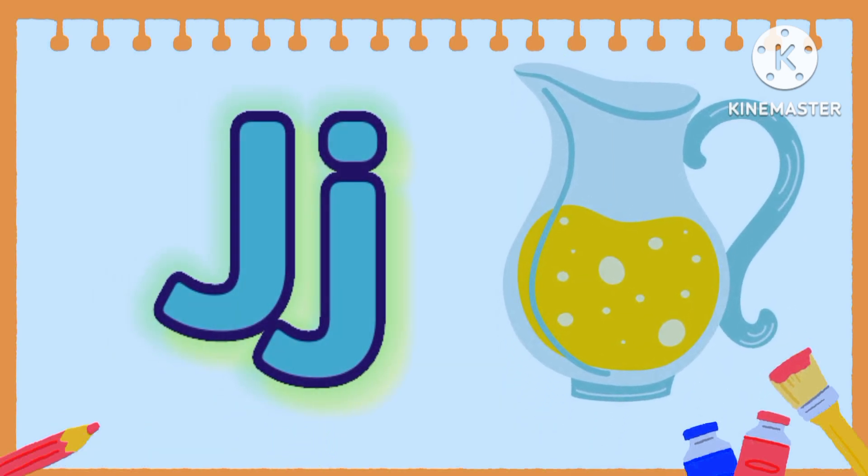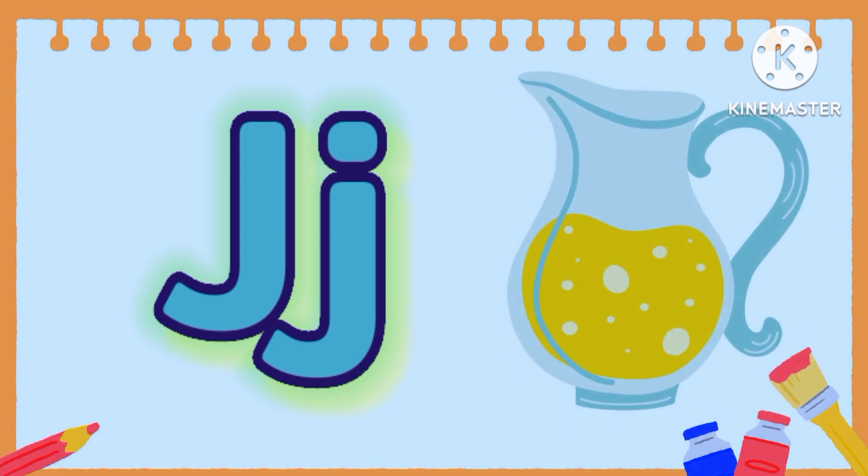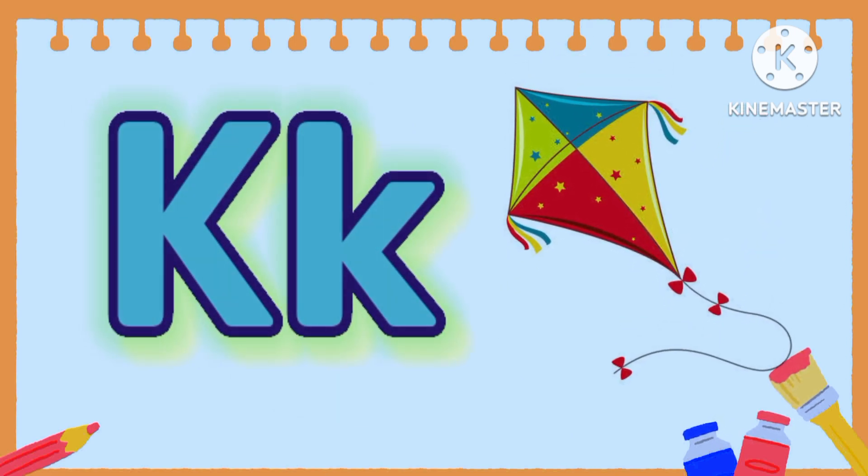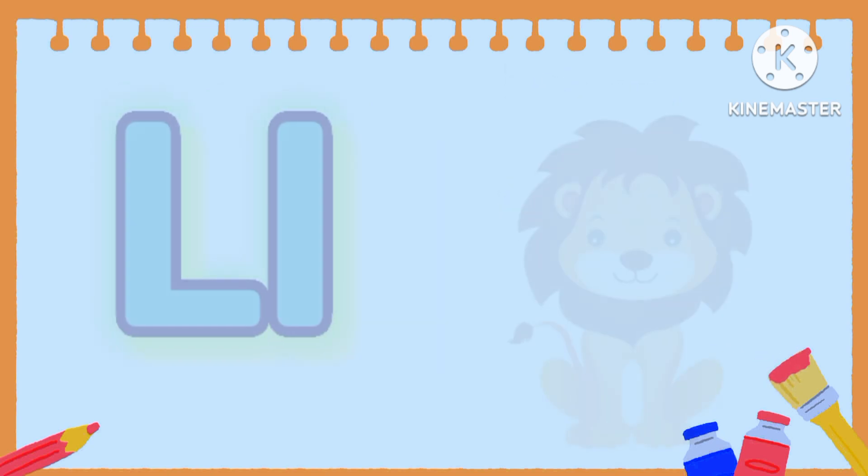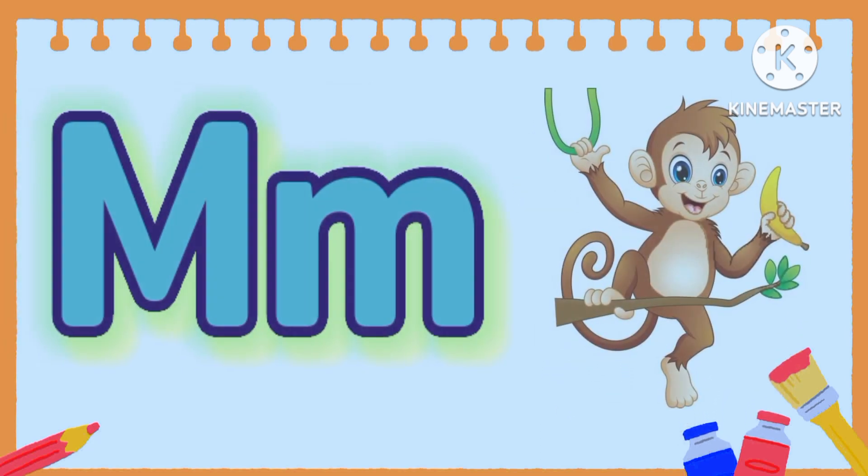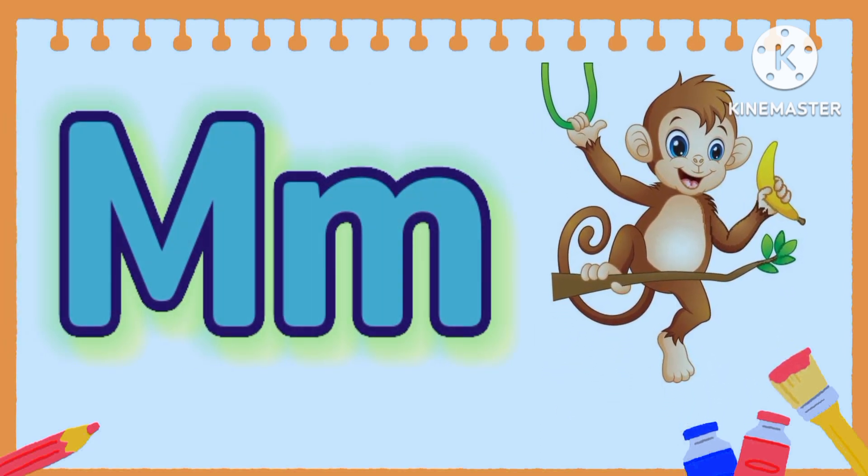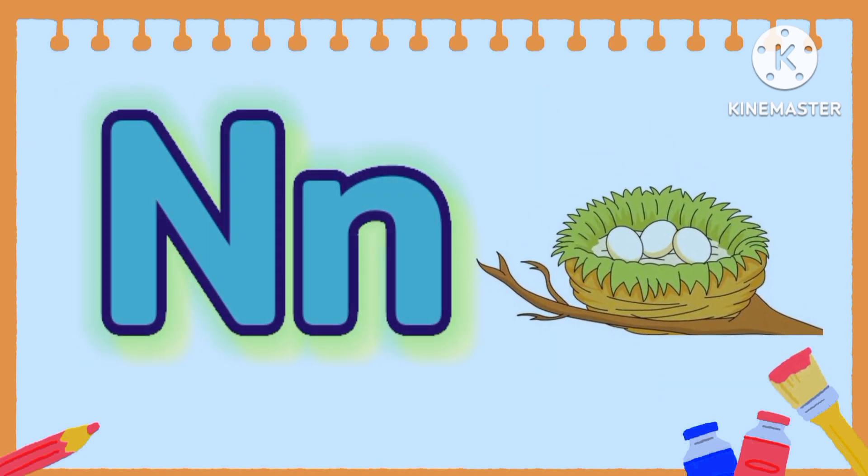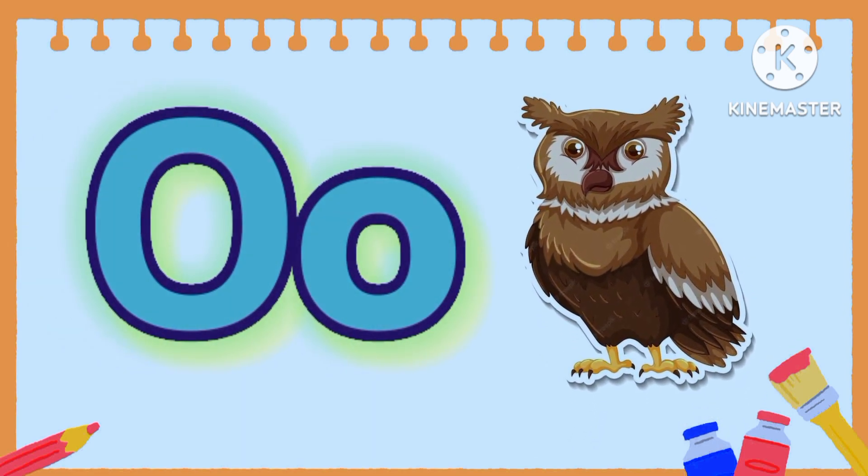H is for Goose. K is for Kite. L is for Lion. M is for Monkey. N is for Nest. O is for Owl.